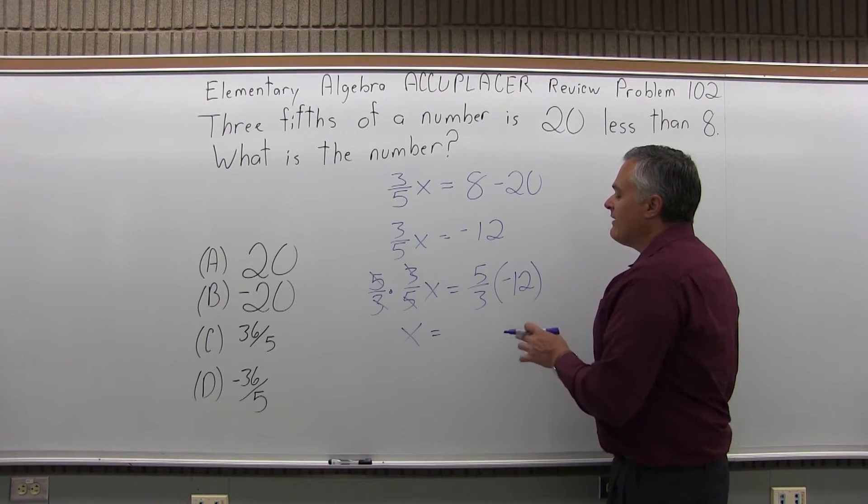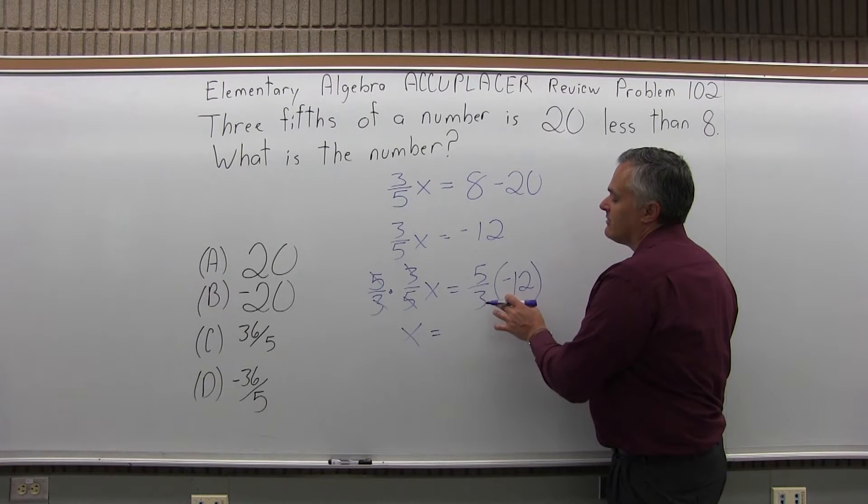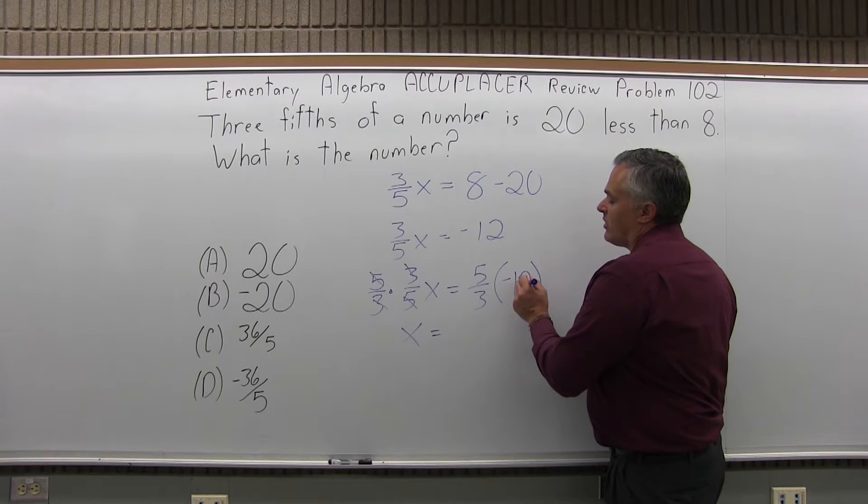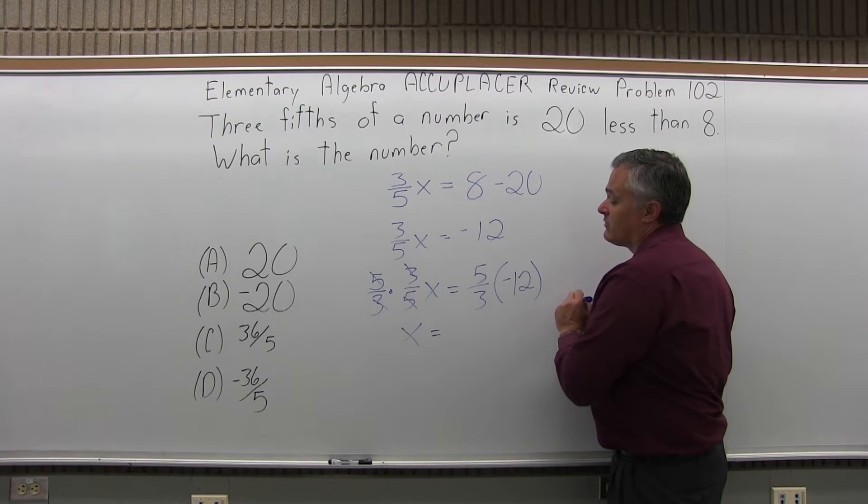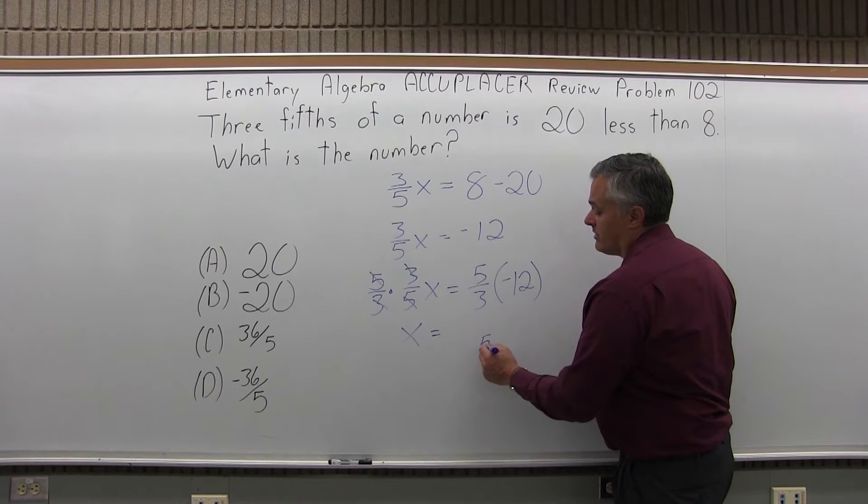Now five-thirds times negative 12. You can either do three goes into negative 12 four times, five times minus four is negative 20, or if you prefer...